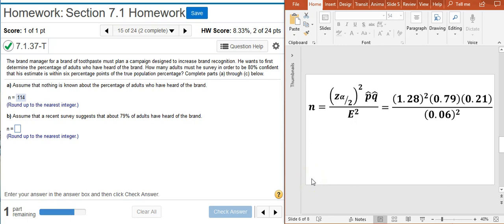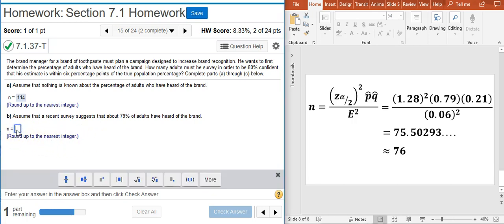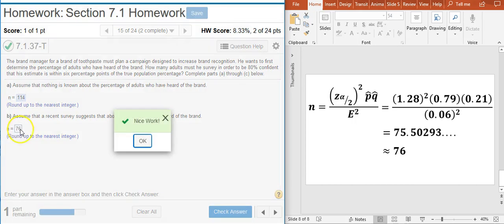We crunch those out on our calculator and we get 75 and a bunch of decimals behind it, so we're just going to round up to the next nearest integer to give us 76. So I put that here in my answer field. Nice work.